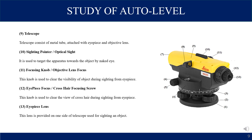Focusing knob or objective lens focus: this knob is used to clear the visibility of the object during sighting from the eyepiece, so the object is clearly visible. Eyepiece focus or crosshair focusing screw: this knob is used to clear the view of the crosshair readings during sighting. You use it so the upper hair, lower hair, and middle hair are clearly visible for taking readings. Eyepiece lens: this lens is provided on one side of the telescope and is used for sighting an object.